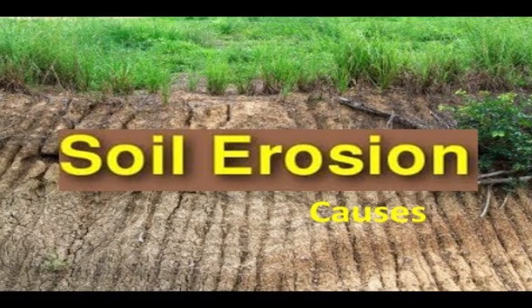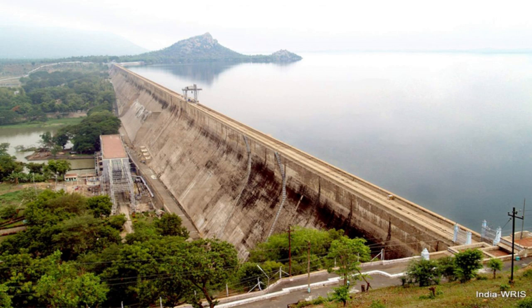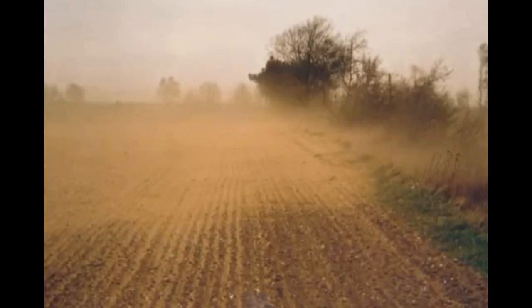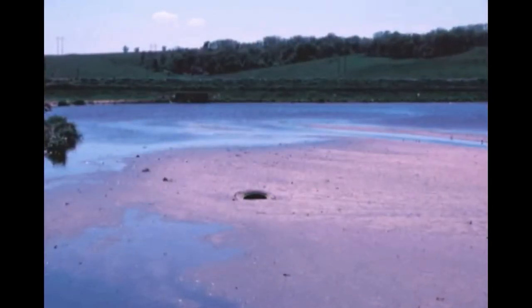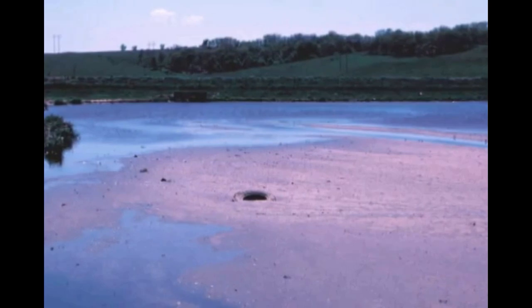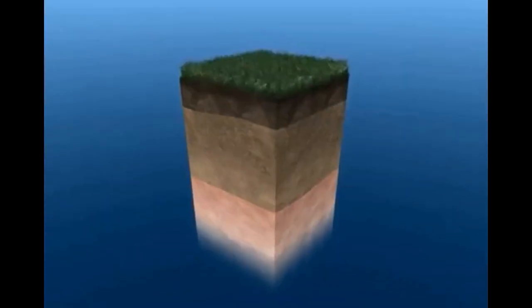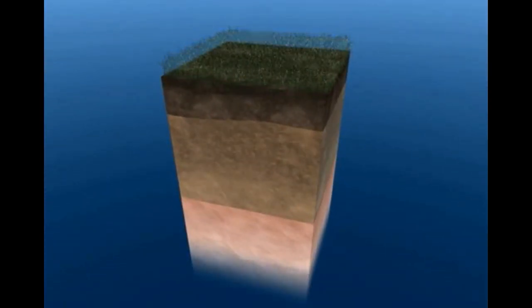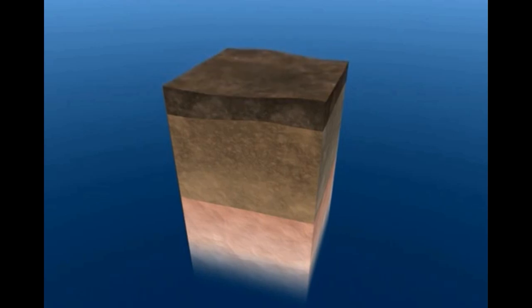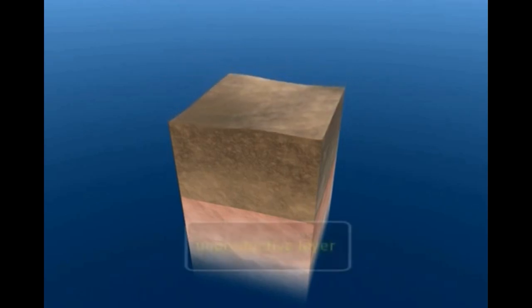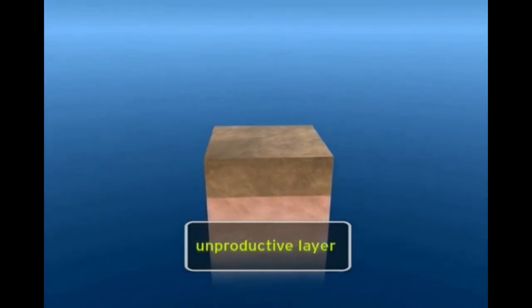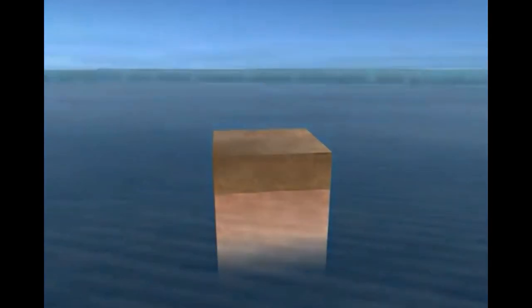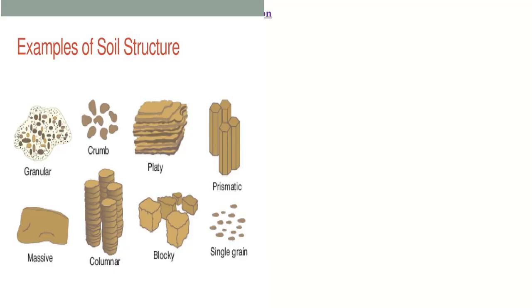Sediment moves into reservoirs, reducing their storage capacity, and this sediment causes pollution in streams, rivers, and other water bodies. In agricultural terms, soil erosion removes the topmost fertile soil and subsequently removes the subsoil layers, making the land unproductive.